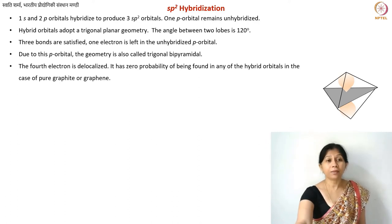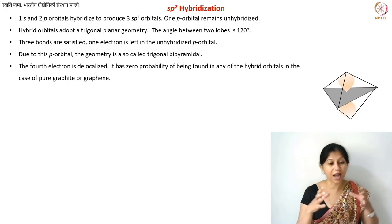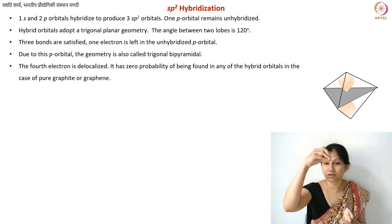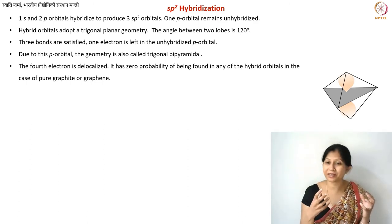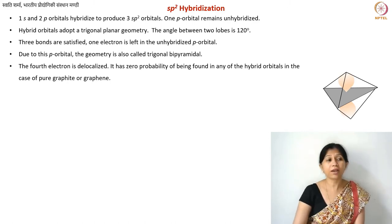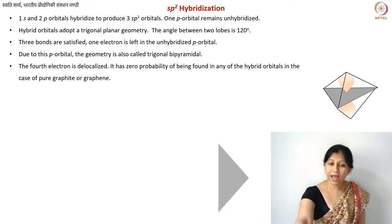Now what happens to the fourth electron? It will go into this unhybridized orbital, but will it have a 100% probability of staying there? If you have this entire molecule in space, the unhybridized electron will sit there in the unhybridized orbital, but as soon as there is a possibility for this electron to move, it will start moving. That is why we call it the free electron — this is the electron responsible for the electrical conductivity of graphite, and many other interesting properties. This is the top view of the triangle, with all three sides equal.